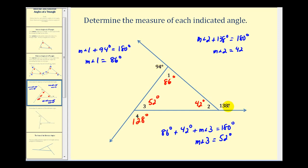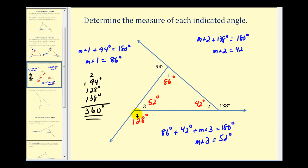Let's take a moment and sum the exterior angles of this triangle: 94 degrees, 128 degrees, and 138 degrees. That adds up to 360 degrees. Notice the interior and exterior angles form three linear pairs, so three times 180 degrees is 540 degrees. If we subtract out the sum of the interior angles, which is always 180 degrees, we get 360 degrees — which matches the sum of our exterior angles. We'll come back to this idea later in the video.